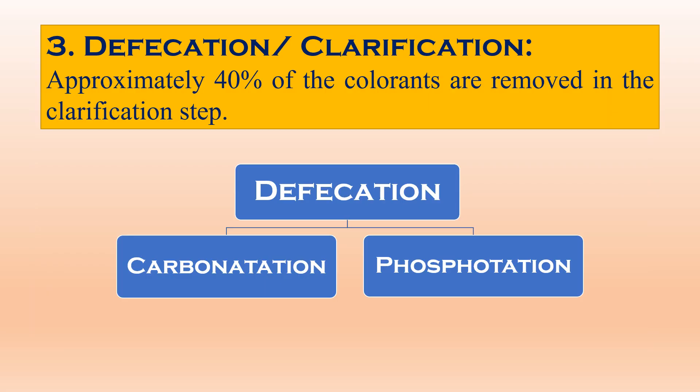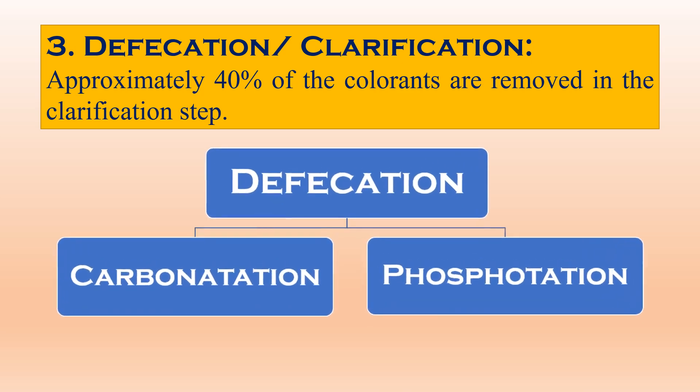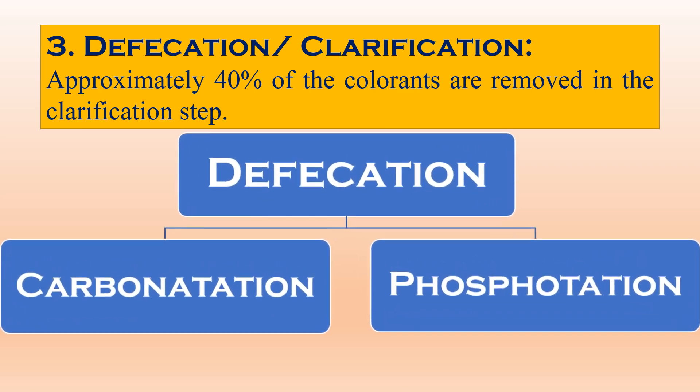After melting, defecation or clarification is done. It is helpful in reducing almost 40% of colorants in this process. Defecation is of two types: carbonatation and phosphatation.